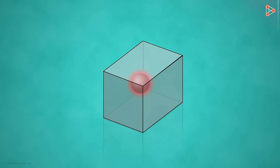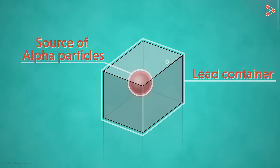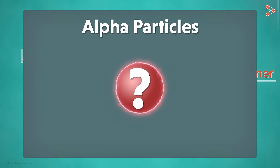As we can see here, he used a source of alpha particles locked in a lead container with a very small slit. This ensured that the alpha particles only came out through a small opening and traveled in a straight line.